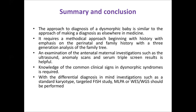To summarize and conclude: the approach to diagnosing a syndromic baby is similar to making any medical diagnosis — it requires a methodical approach beginning with history, with emphasis on family history and at least a three-generation pedigree chart. Examination of antenatal maternal investigations such as anomaly scans is important. Knowledge of common clinical signs and dysmorphic features helps make an initial diagnosis, opening an important window for genetic diagnosis so the patient can receive appropriate follow-up and treatment.